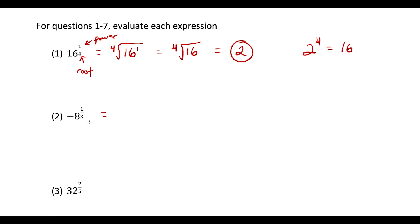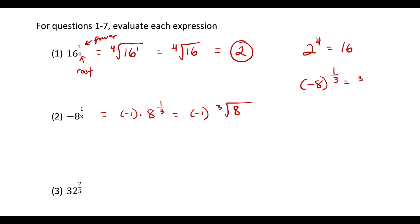For this one, we rewrite as negative 1 times 8 to the one-third. When we convert this, we write negative 1 times the cube root of 8 — the negative 1 stays on the outside. If we had negative 8 to the one-third, that would be the cube root of negative 8. But because the negative was not included in parentheses, we treat it as negative 1 times the cube root of 8, which is 2, giving us negative 2. Either way the result is the same here, but this detail can affect other questions.